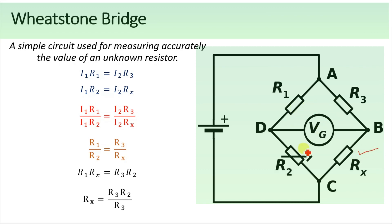This circuit consists of four resistors: R1, R2, R3, and Rx. Between them is connected a galvanometer or ammeter which shows the flow of current.